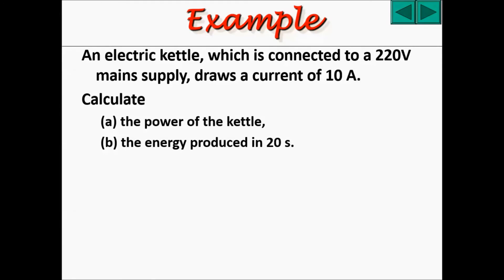Now, let's try an example. An electric kettle, which is connected to a 220-volt main supply, draws a current of 10 amperes. Calculate the power of the kettle, and the energy produced in 20 seconds.